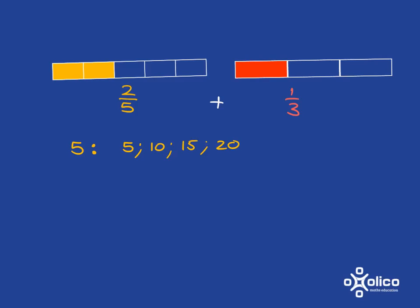And then I go to the other denominator, and I write down some of its multiples, and I stop as soon as I get something that is the same in both those lists, and that will be my common denominator.